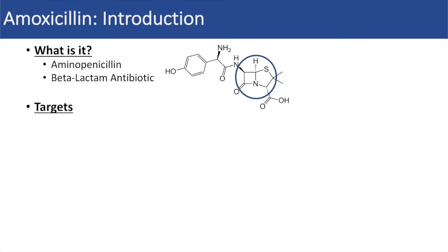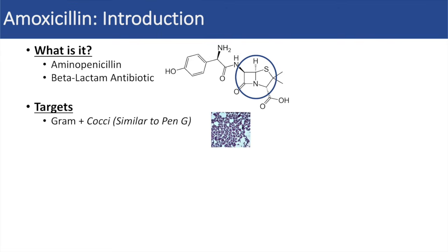Now, what are some of the targets of amoxicillin? Well, some of the targets of amoxicillin include the gram-positive cocci, which is similar to penicillin G. Penicillin G is also a beta-lactam antibiotic, but amoxicillin has increased effectiveness against enterococci, as opposed to penicillin G.